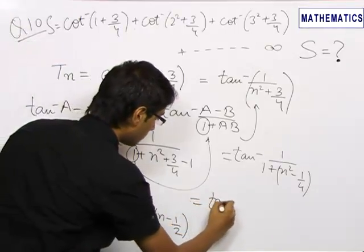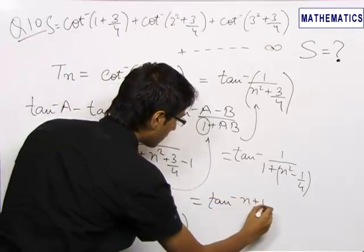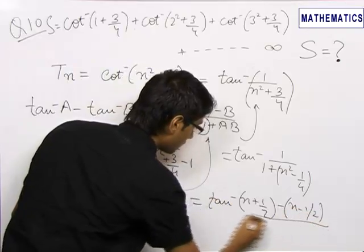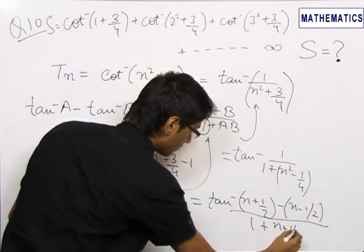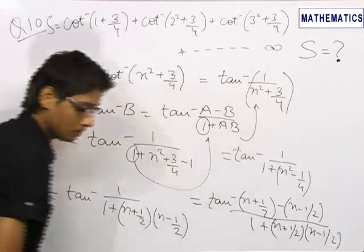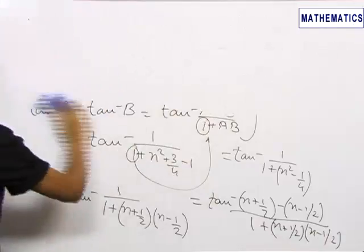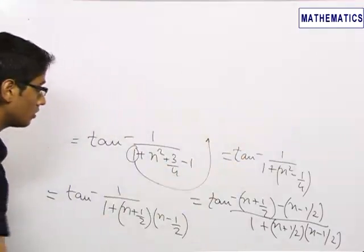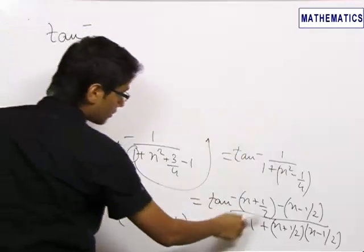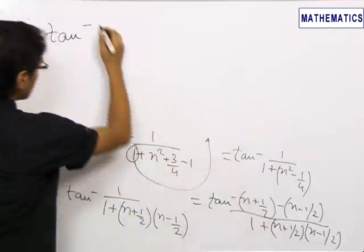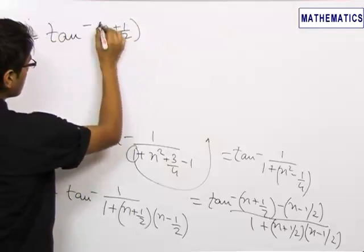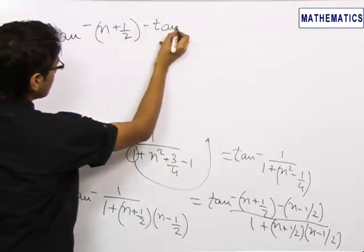Now the 1 in the numerator can be written as (n + 1/2) − (n − 1/2), and the denominator remains as it is. We can clearly see this whole thing has changed to the format of tan⁻¹((a − b)/(1 + ab)), so this can be written as tan inverse of (n + 1/2) minus tan inverse of (n − 1/2).